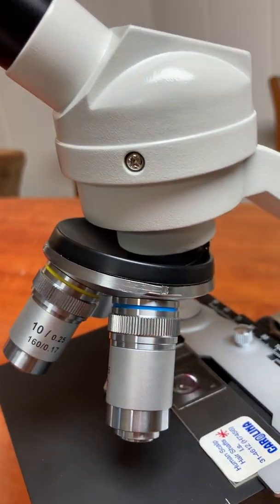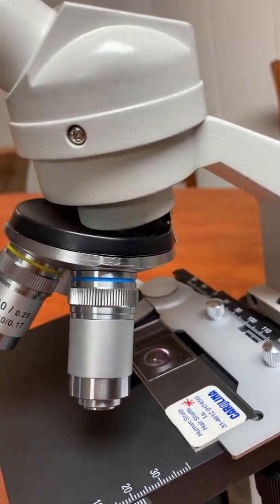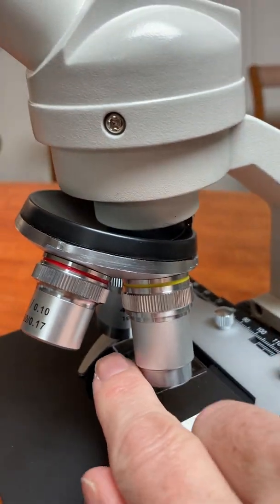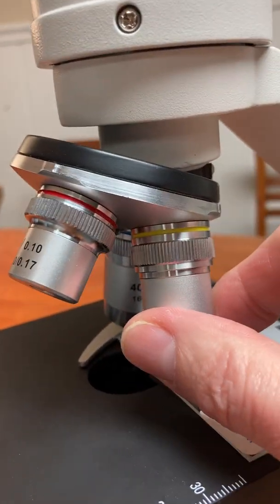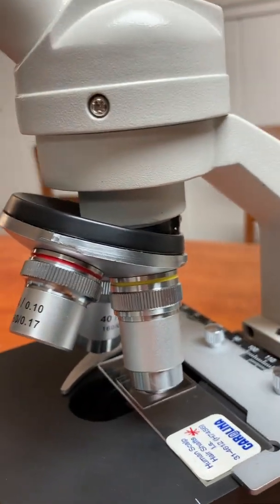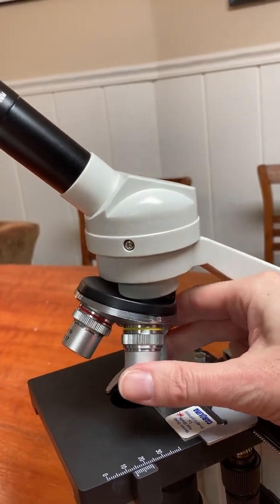And then this blue objective is the tallest and it's the strongest objective that we have. It's called the high power and it has a 40 on it because it magnifies 40 times. It's hard to see. There it is. In person, it's a lot easier to see these numbers than it is with me filming this with my left hand when I'm right handed.